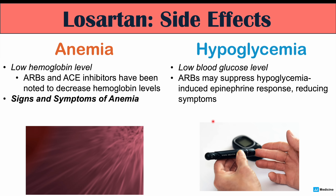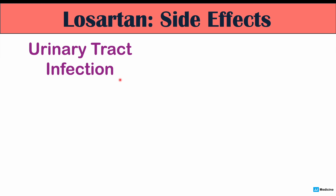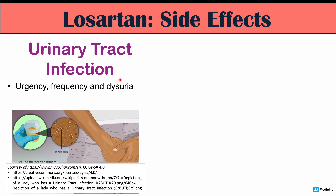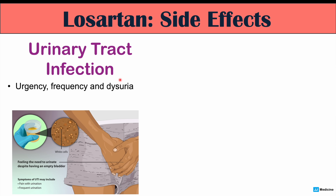Both anemia and hypoglycemia may be relatively common, affecting perhaps roughly 10% of patients. We can also see an increased risk of urinary tract infections in Losartan users — a bacterial infection of the urinary tract leading to symptoms like urgency, frequency, and dysuria, which is a burning sensation when urinating. Urinary tract infections do seem more likely to occur in Losartan users, likely due to effects on urinary excretion, although the risk is still quite low.